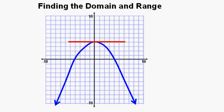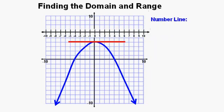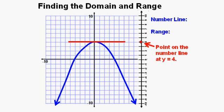Now let's define the range of this relation. The top of the graph is marked by a horizontal line segment in red, which is an upper boundary to the graph. Verbally, the range of this function is less than or equal to 4, because 4 is an output value and any real number less than 4 is also in the range. We can draw this on a number line tilted vertically to match the y values, with a point at 4 and an arrow below, since all real numbers less than 4 are part of the range.